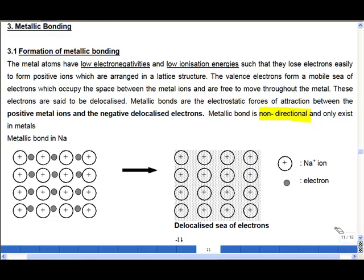So firstly, let's look at metallic bonding in metals. We know that metal atoms have low electronegativity and relatively low ionization energy, such that they lose electrons easily to form cations. And inside a metal, the cations are being arranged in a lattice structure similar to your ionic compound.